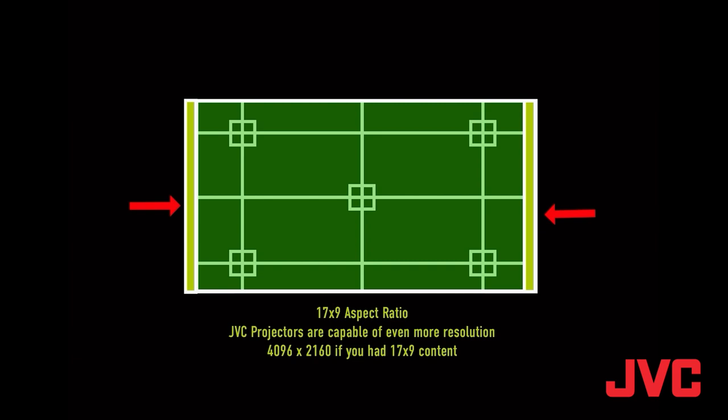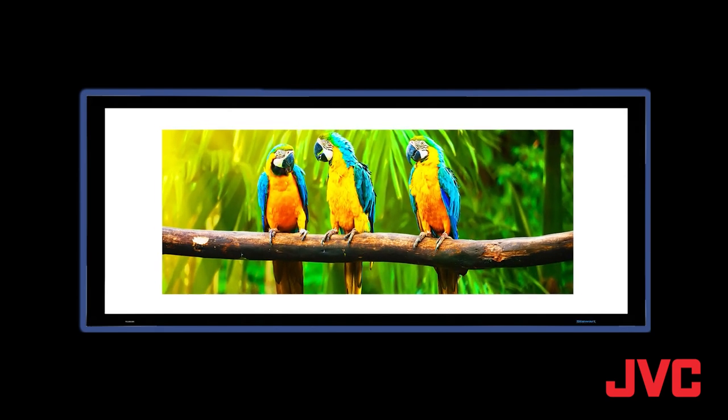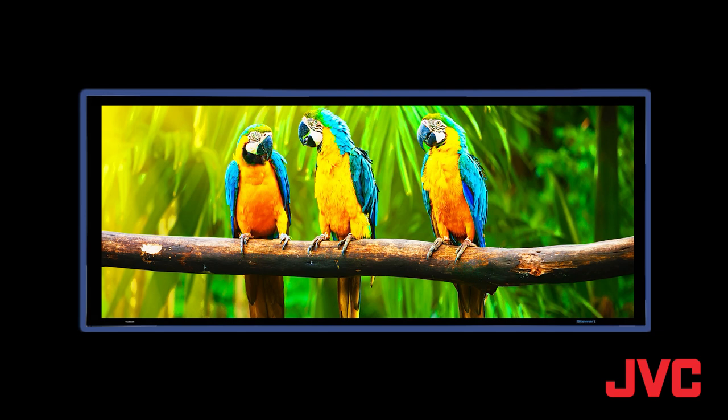If you're going to line up a 2.35 or 2.40 or some other aspect ratio, because JVC DILA projectors have the ability to go back and forth, we have motorized presets for that. You just line up the top and the bottom with your new content. You put your 2.35 content on there, and you line up the top and the bottom, and it'll fill the whole screen of a 2.35.